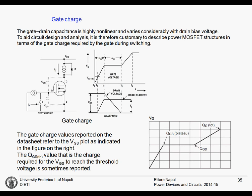On the datasheets you also find another value that is at least as important: the gate charge. The gate-to-drain and related capacitances — CISS, COSS — are very non-linear, and it is difficult to track the device behavior from those curves. What is really significant from a practical point of view is that when you switch the device on, you will see a gate voltage with a characteristic shape, and the integral of the current — assuming constant current flow — is the charge needed to switch the device on and off.